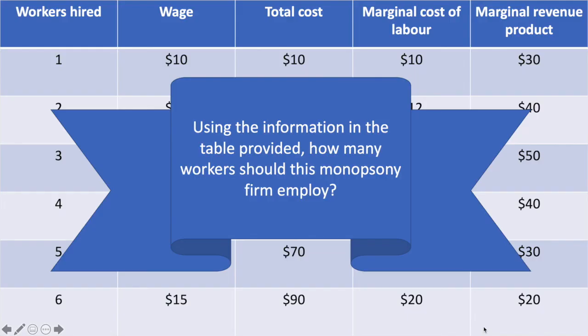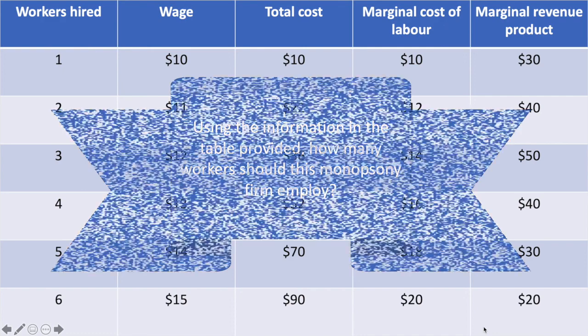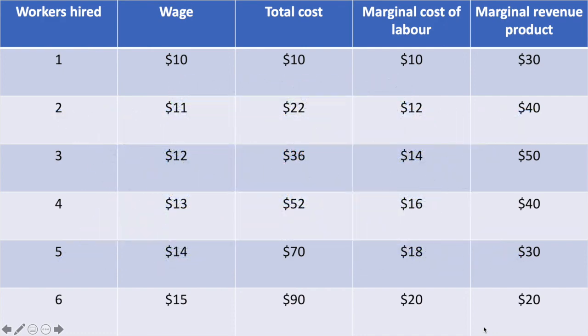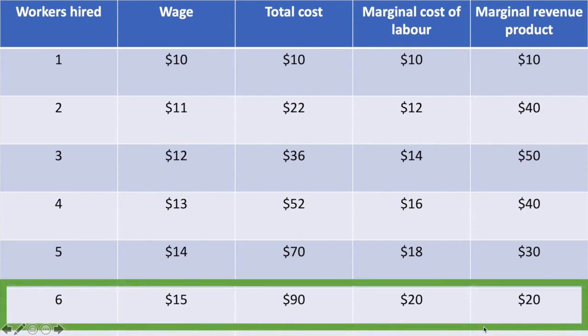Using the information in the table provided, how many workers should this monopsony firm employ? Pause the video and proceed when you think you've got the answer. The correct answer is 6. If the employer wants to profit maximise, they should employ the quantity of workers where MRP is equal to the marginal cost of labour. In this case, it happens with 6 workers hired and each worker will be paid a wage of $15.